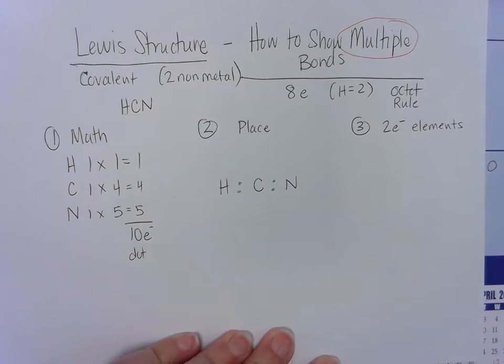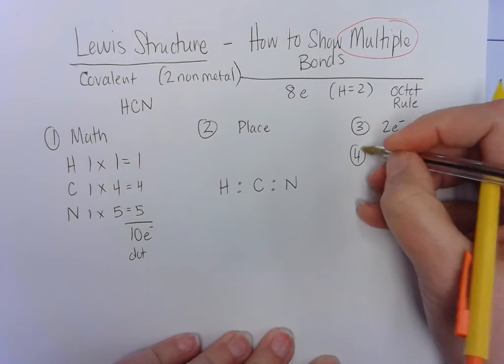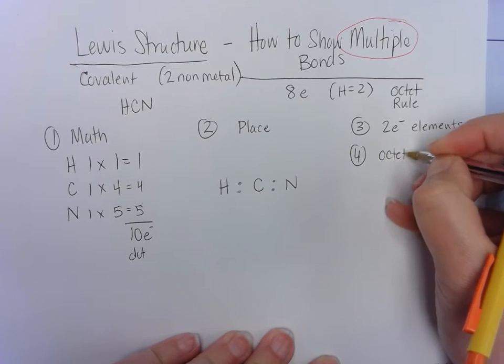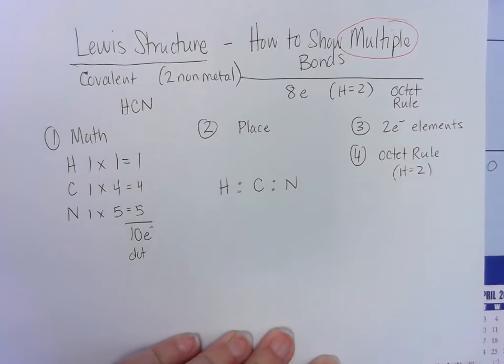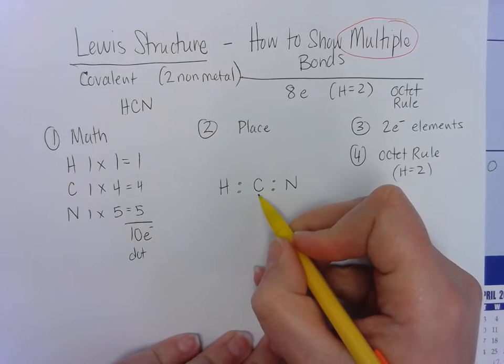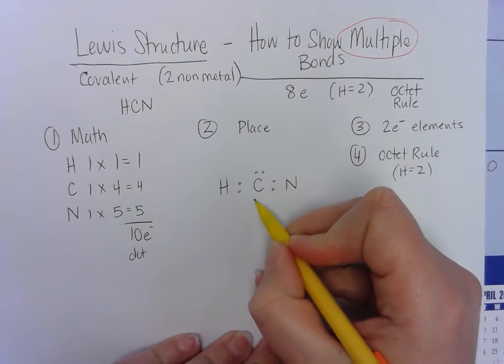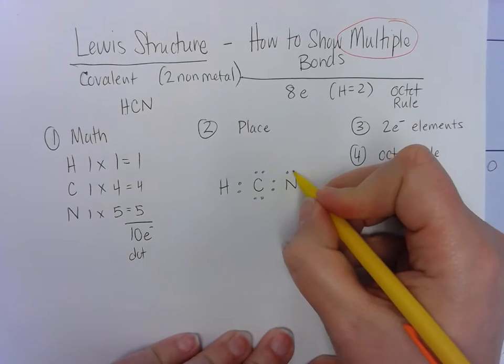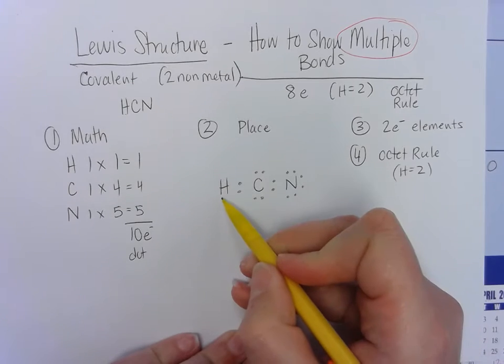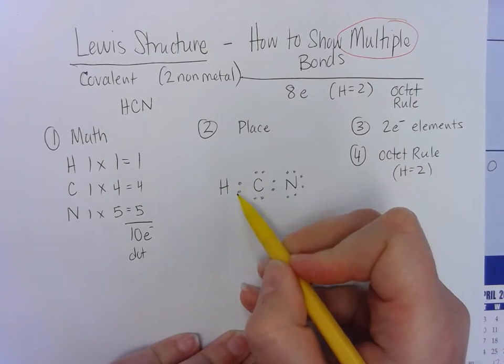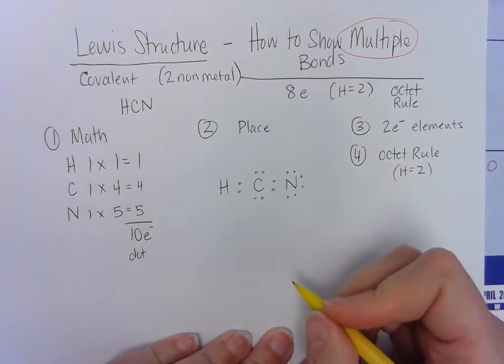All right, and this is pretty simple. Step four, then we need to complete our octet rule. Remember, hydrogen only gets two. When we do that, carbon here in the center needs to have some more electrons on it, and nitrogen also needs some more electrons. Hydrogen is happy with just this two. It is stable. It has met its octet rule.